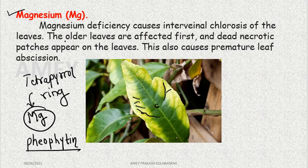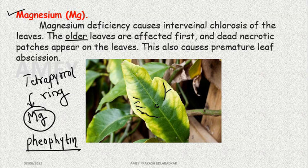First, the effect will be on older leaves. Necrotic patches will develop, and premature abscission will occur — meaning leaves will fall early.